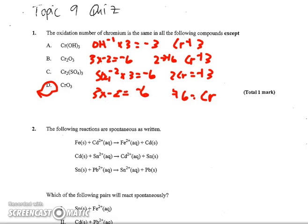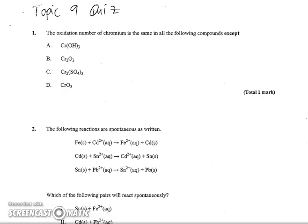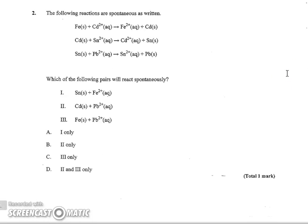Number 2 asks, the following reactions are spontaneous as written, and which of the following pairs will react spontaneously? As you look at this, you need to set up a reactivity series based on the information given, and fortunately they put them right in order for you. The first one you see that Fe must be more reactive than Cd because it's able to push its electrons on it. And then cadmium is able to react with tin ions, so cadmium is more reactive than tin, and tin is able to react with lead ions, so tin is more reactive than lead.